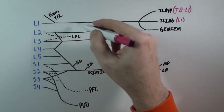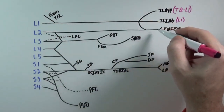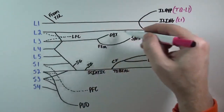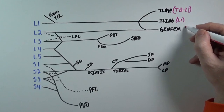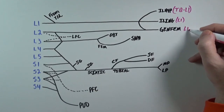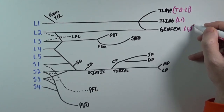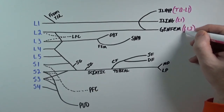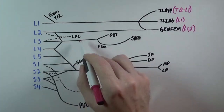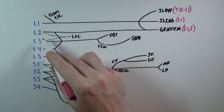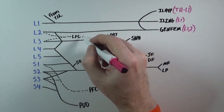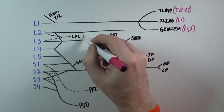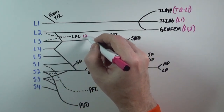If we trace L1 to where it hooks up with L2, we have the genitofemoral nerve. The lateral femoral cutaneous nerve comes from L2 and L3 and runs behind the plexus, hence the dotted line.